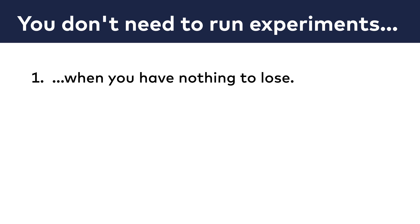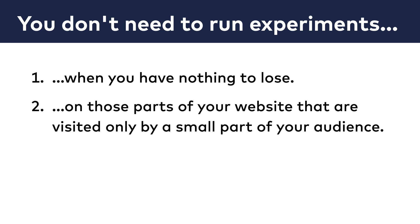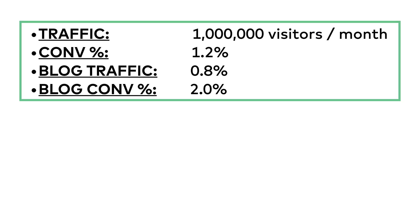The second best practice is this: you don't need to run experiments on those parts of your website that are visited by only a small part of your audience. Let's take an example and calculate the exact figures. Say you have an e-commerce store with 1 million new visitors per month, and around 1.2% of them convert into paying customers. You also have a blog visited by 0.8% of these new users, and you know the blog helps people buy your products.